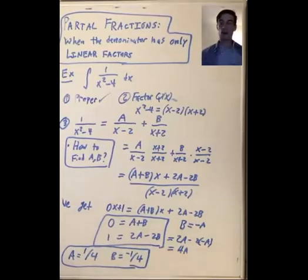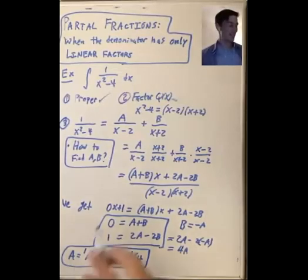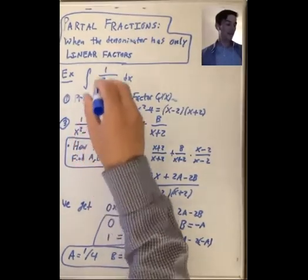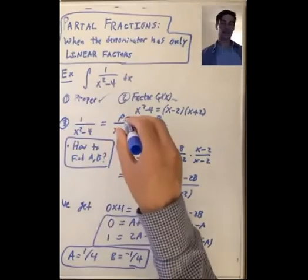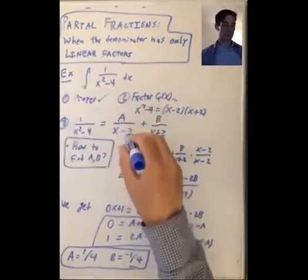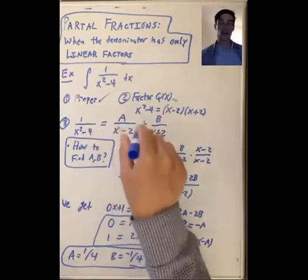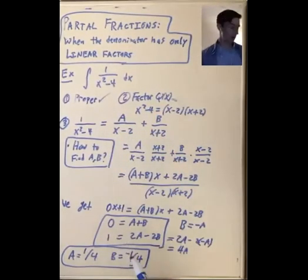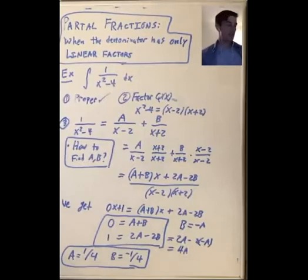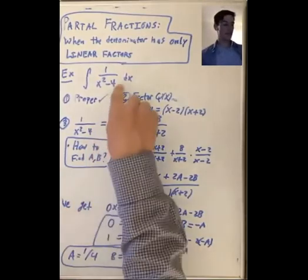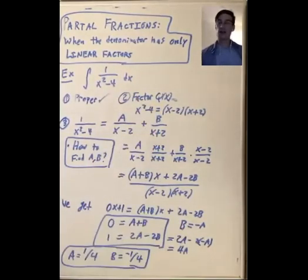Often the hardest part of the method of partial fractions — of integrating a rational function — is rewriting the function you're integrating as a over something plus b over something. This really is just algebra; there's no calculus that goes into this step. I'll pause and then rewrite the integral we're trying to do and finish up the details.